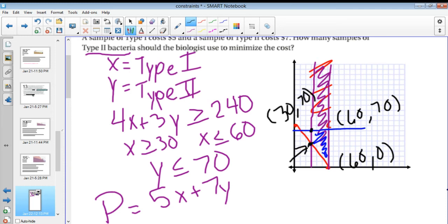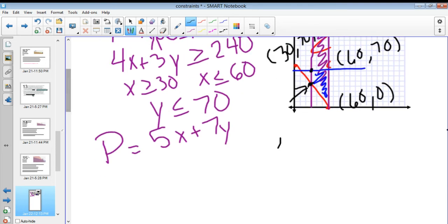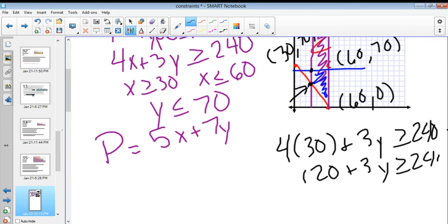I know that my x value is 30, so I'm going to plug that back in to the original and say 4 times 30 plus 3y is greater than or equal to 240. So that means 120 + 3y is greater than or equal to 240, which means 3y is greater than or equal to 120, which means y is greater than or equal to 40. So that point there would be (30, 40).